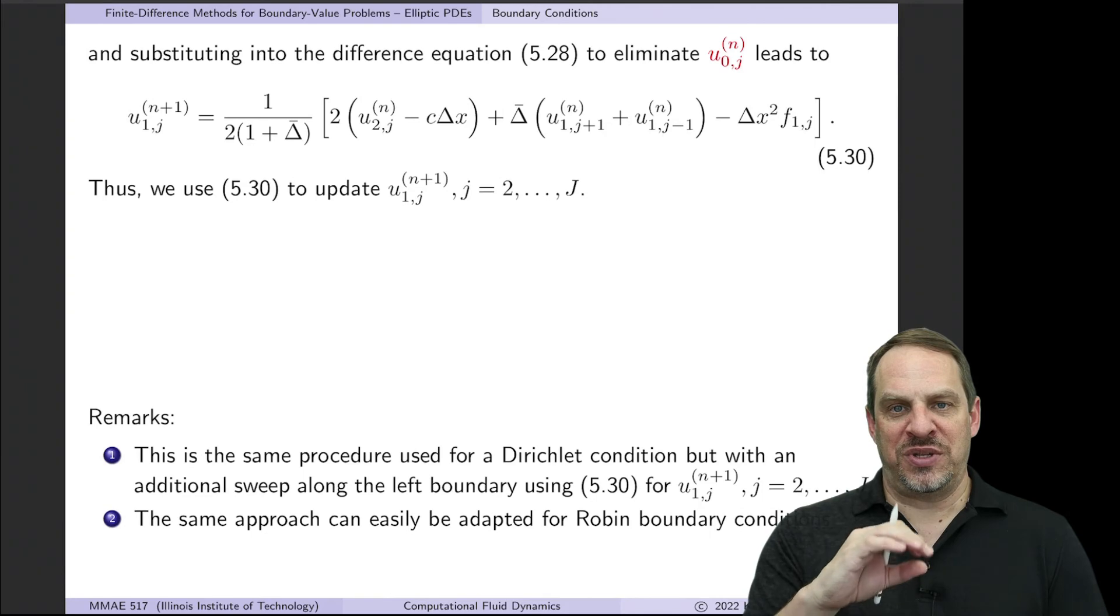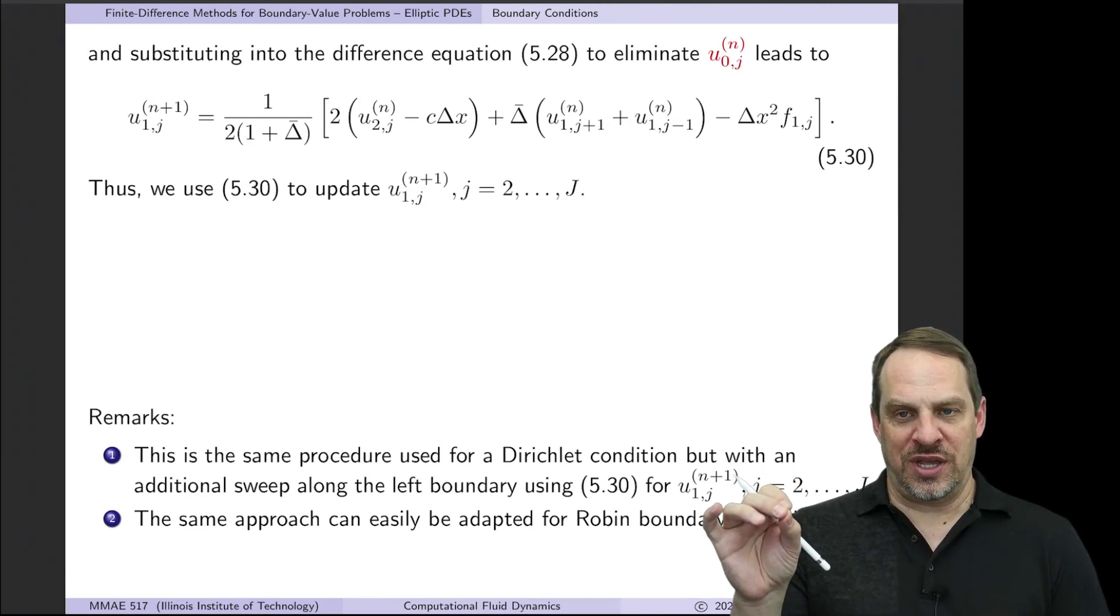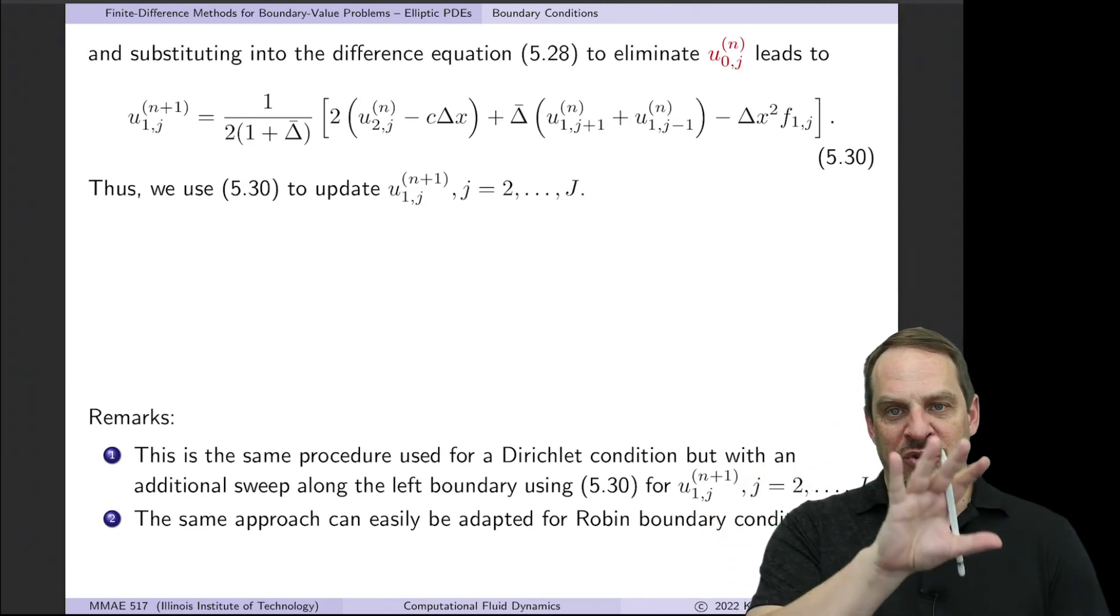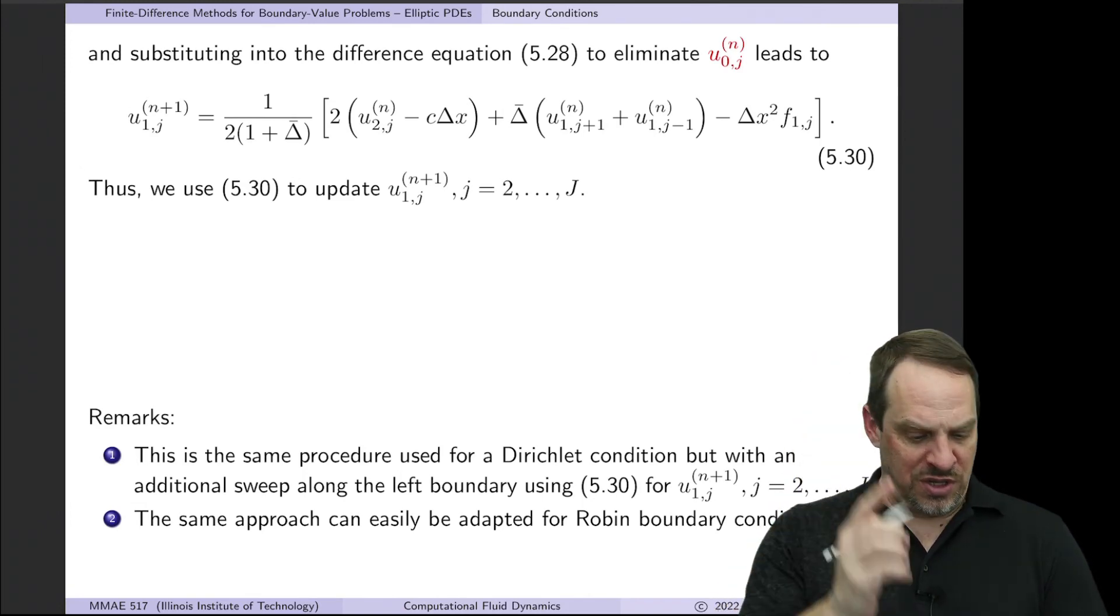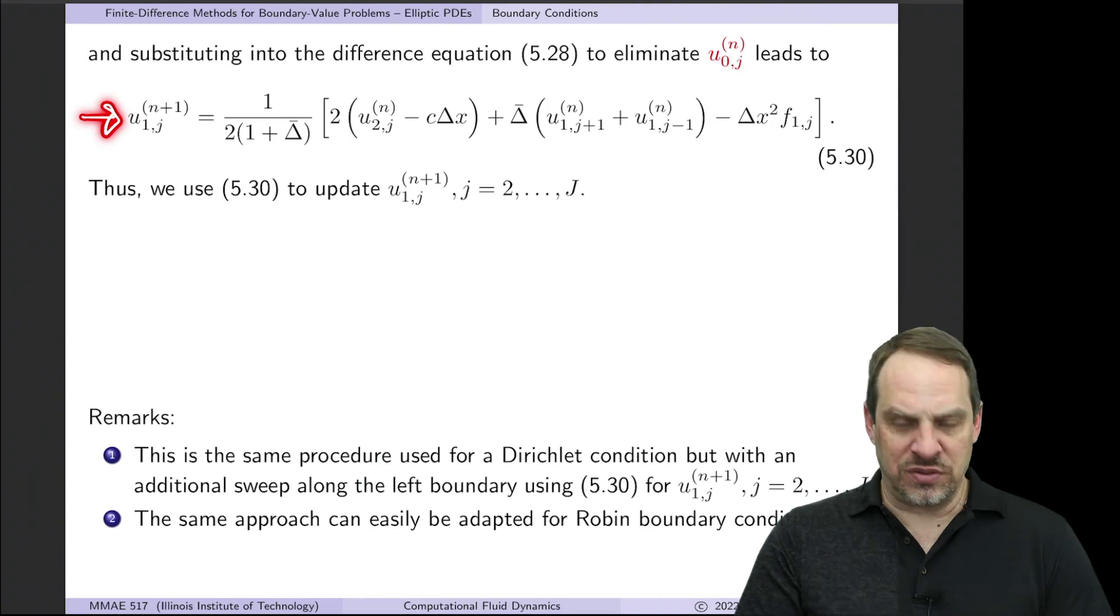So the only additional step as compared to the Dirichlet condition case is we have the same equation for the interior of the domain. But now we have an additional sweep along the left boundary using this equation. And that's it.